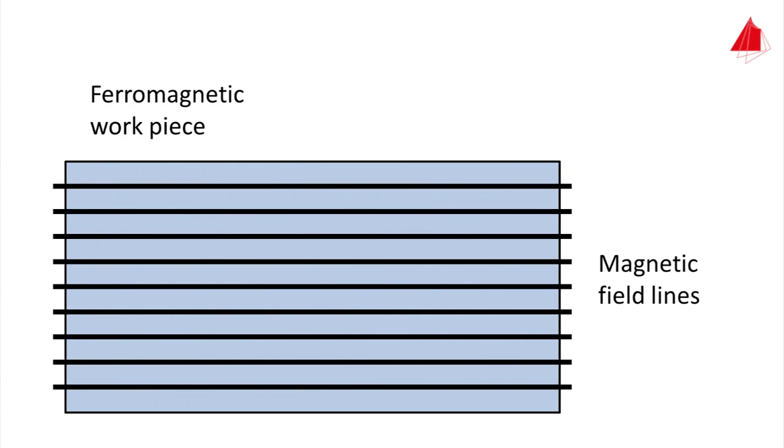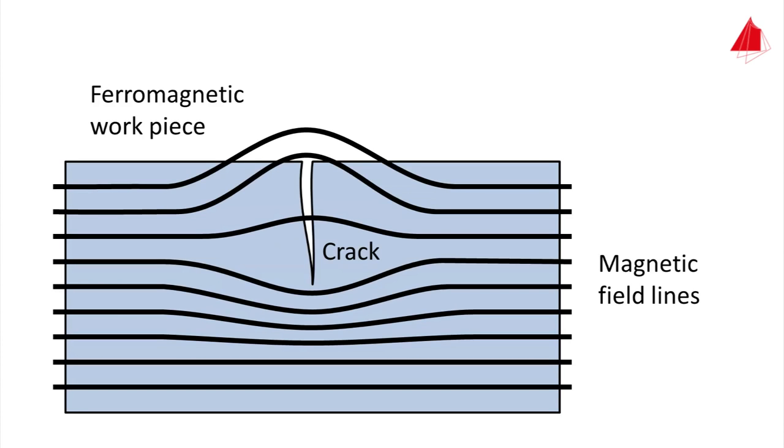If the workpiece is free from defects, the magnetic field lines run within the workpiece and parallel to its surface. In places of magnetic inhomogeneity, for instance near cracks, the magnetic field lines will locally leave the surface and a leakage field occurs.